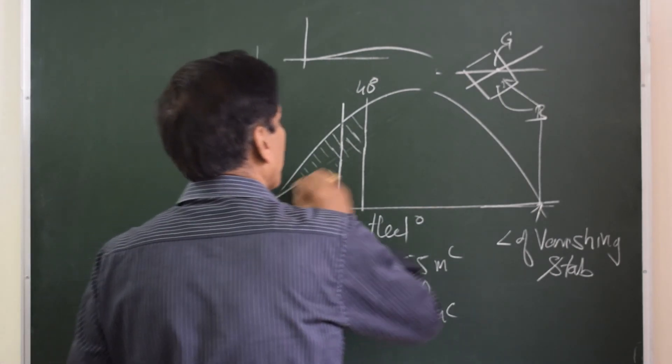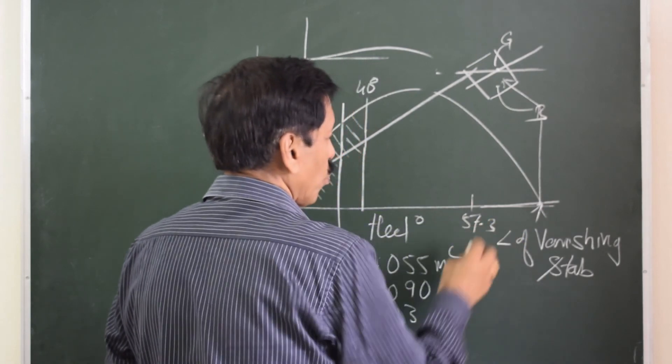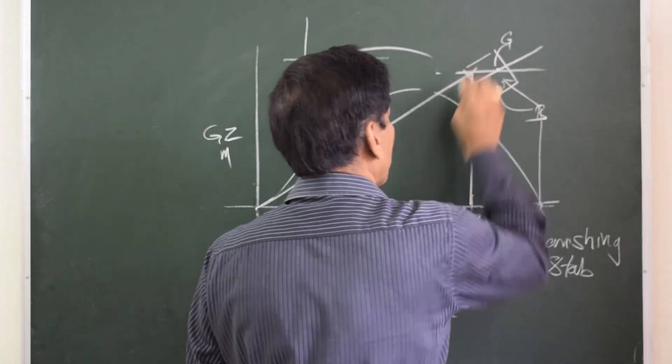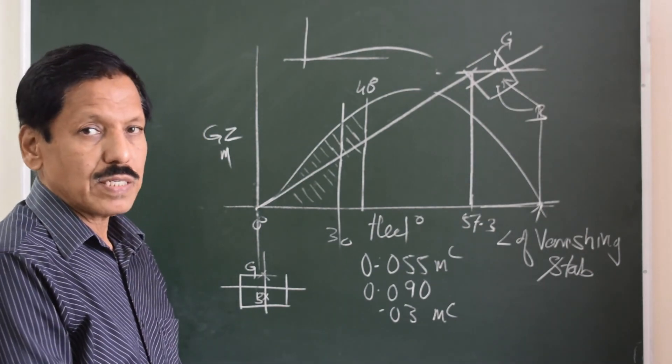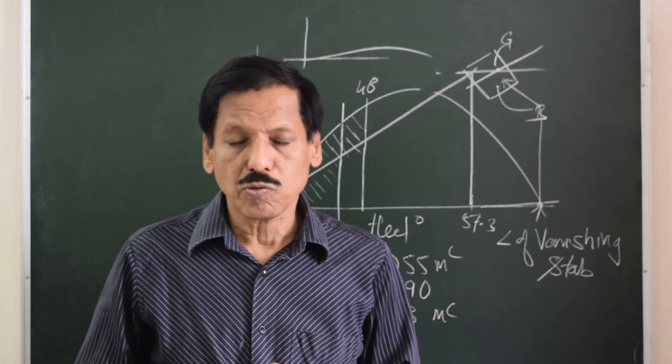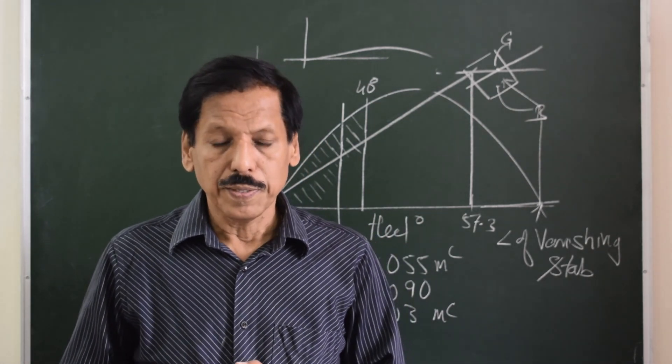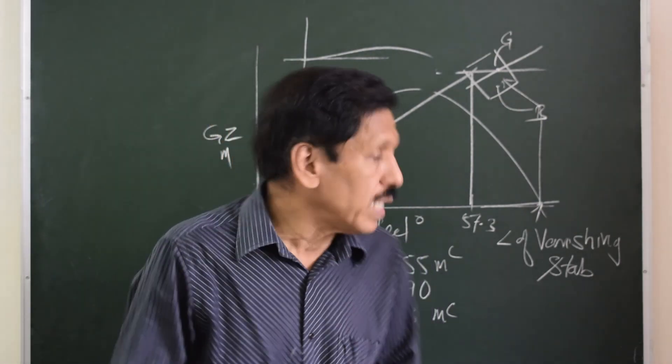Then the last criteria: GM which we measure at 57.3 degrees—the GM of the vessel should not be less than 15 centimeters. By satisfying this criteria, you are actually satisfying the legal criteria, the minimum criteria which ships comply with in intact conditions.